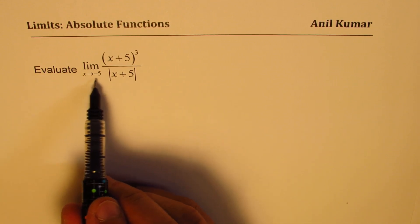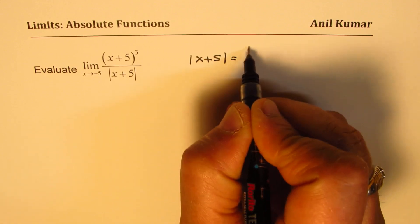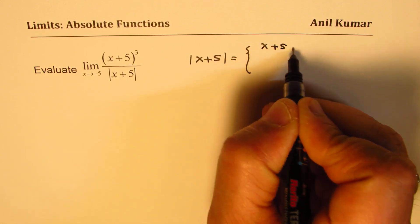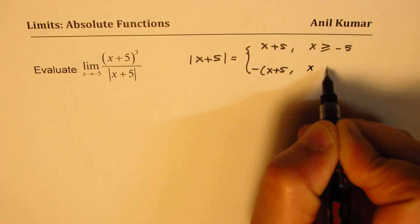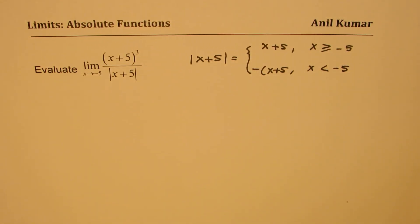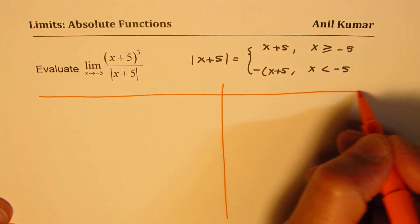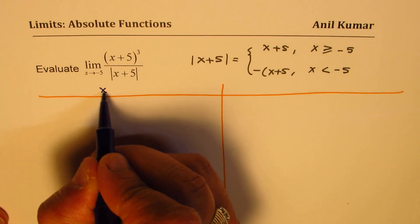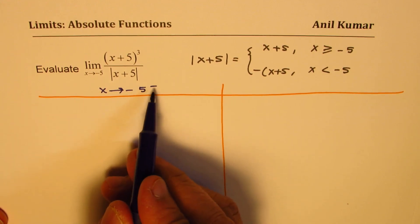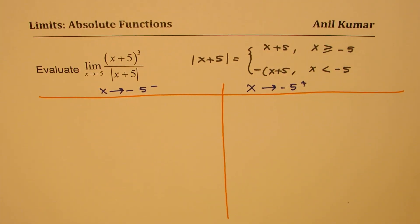We need to find the limit as x approaches minus 5. Absolute value of (x+5) is defined as positive (x+5) for x greater than or equal to minus 5, and negative (x+5) for x less than minus 5. So we'll divide the work into two parts: the left-side limit and the right-side limit.